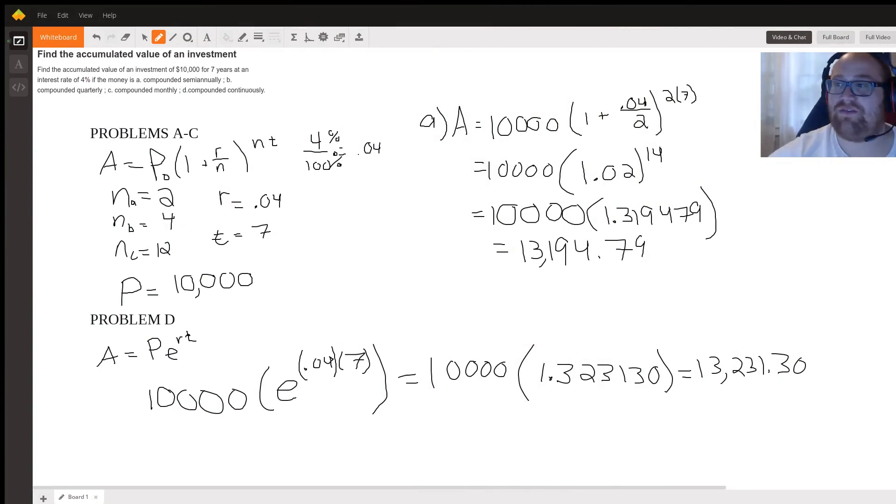Alright, so welcome to my video. In this video I'm going to answer the question seen in the top left. Basically, you have two different equations. For parts A through C, you can see that the equation is A, or the final amount, equals P naught, which is the initial amount, the amount that you're investing, so $10,000 as you can see here.